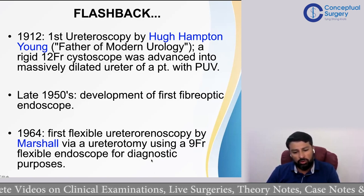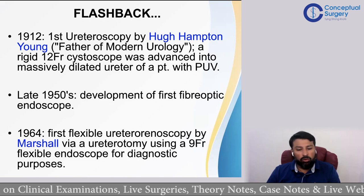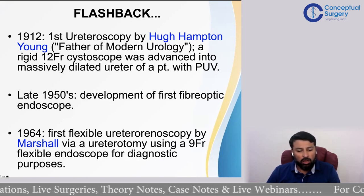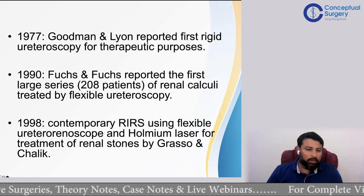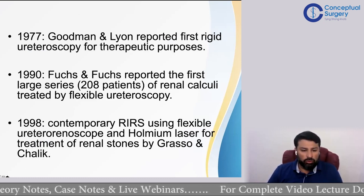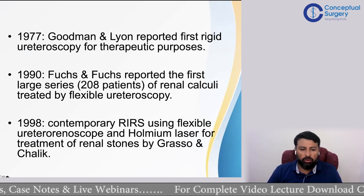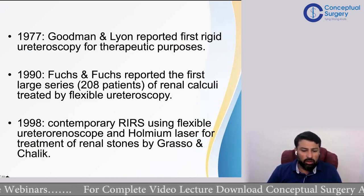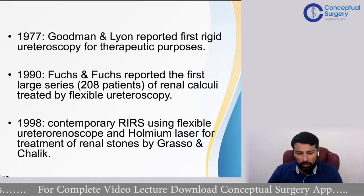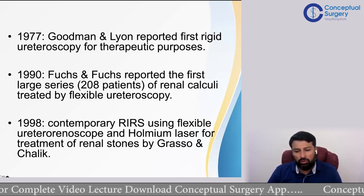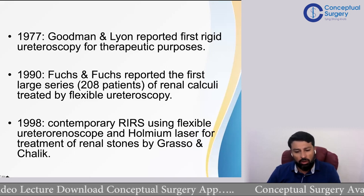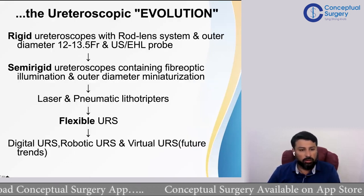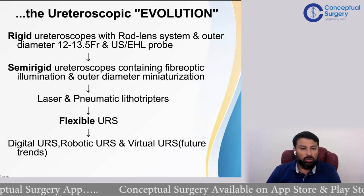In 1964, Marshall developed the first flexible ureteroscope, which was further elaborated by Fuchs and Fish, and later by Goodwin and Lyon. Fuchs reported the first series of successful flexible URS. The contemporary RIRS technique using a flexible scope and laser was used by Grasso and Chaussy in 1998 for the first time.